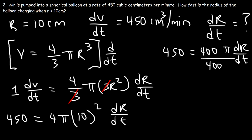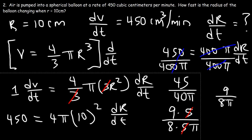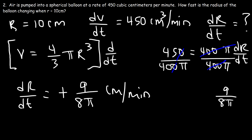Dividing both sides by 400π and simplifying: 450 over 400 reduces — cancel a zero to get 45/40, then 45 = 9×5 and 40 = 8×5, so cancel the 5. Therefore dr/dt = 9/(8π) centimeters per minute.